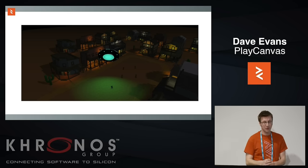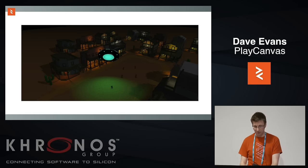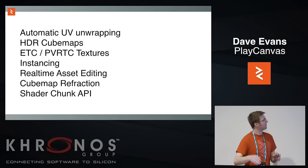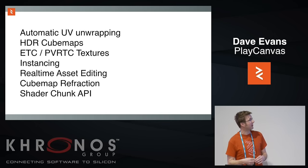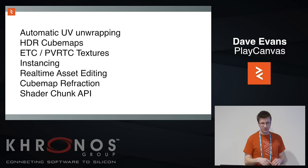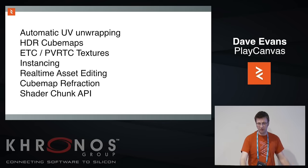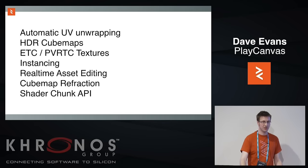That's coming out this week — by the time we get home from GDC, it should be launched. There's also a whole bunch of other stuff we've done: mobile texture compression support, instancing, real-time asset editing, and a shader chunk API.